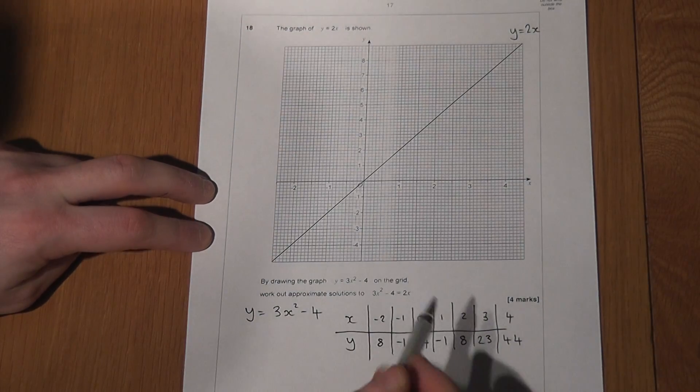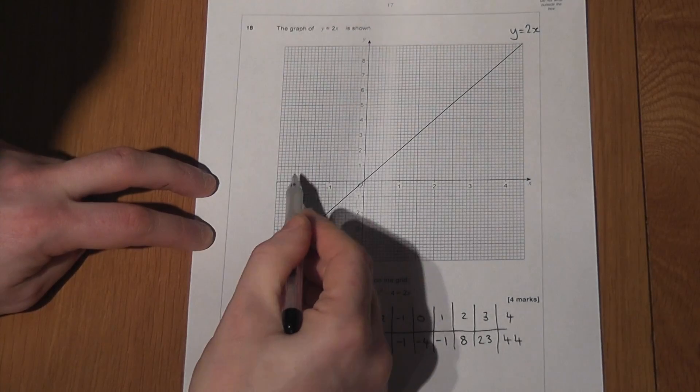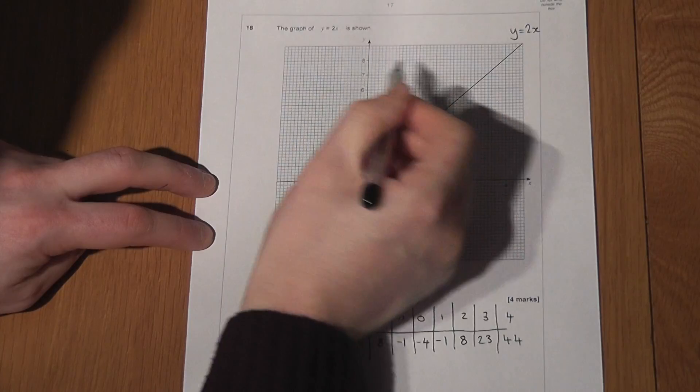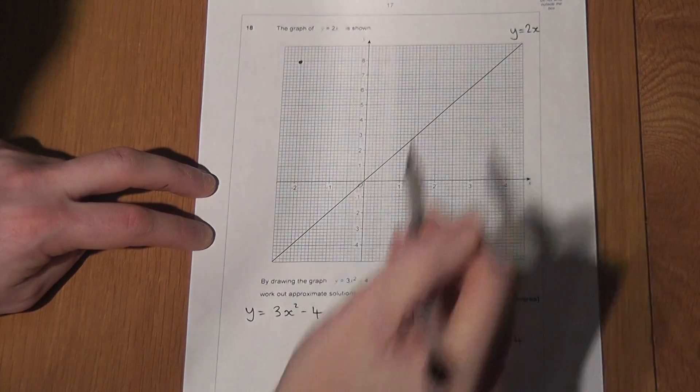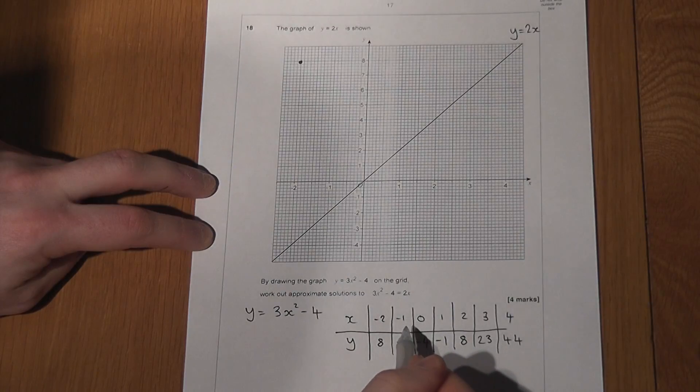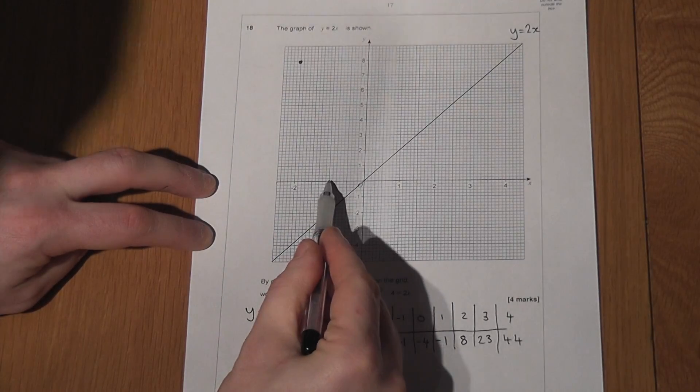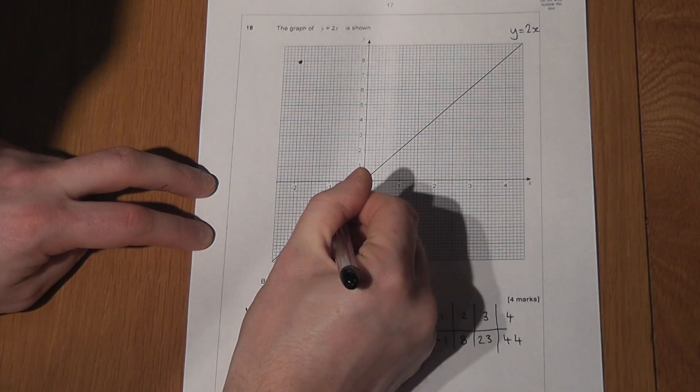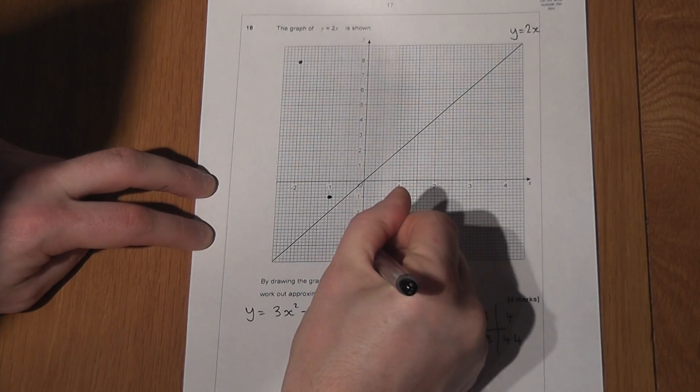So for example, if x is minus 2, y is 8. So if x is minus 2, I can find y equal to 8. If x is minus 1, y was minus 1. So x is minus 1, y is minus 1. When x was 0, y was minus 4.